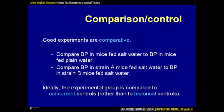The second principle of experimental design is comparison or control. Good experiments are comparative. We should compare the blood pressure of mice fed salt water to the blood pressure of mice fed plain water. Ideally, we compare concurrent controls rather than historical controls — we don't compare today's salt water mice to last year's plain water mice. Rather, we should study both treatment groups simultaneously, since something may have changed from last year to this year other than just the salt in the water.